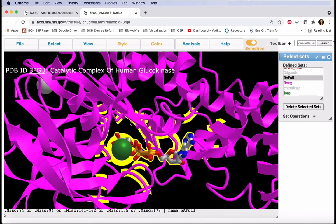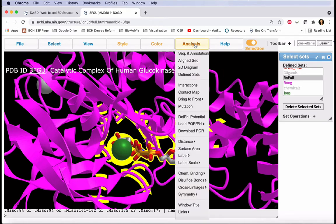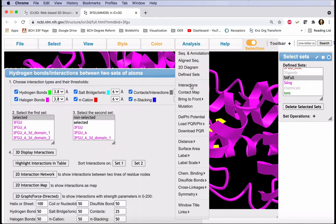I haven't yet displayed the sidechains as sticks. That's going to happen automatically when we show interactions, and I'll show you how to do it manually in a moment. In the Analysis menu, select Interactions.